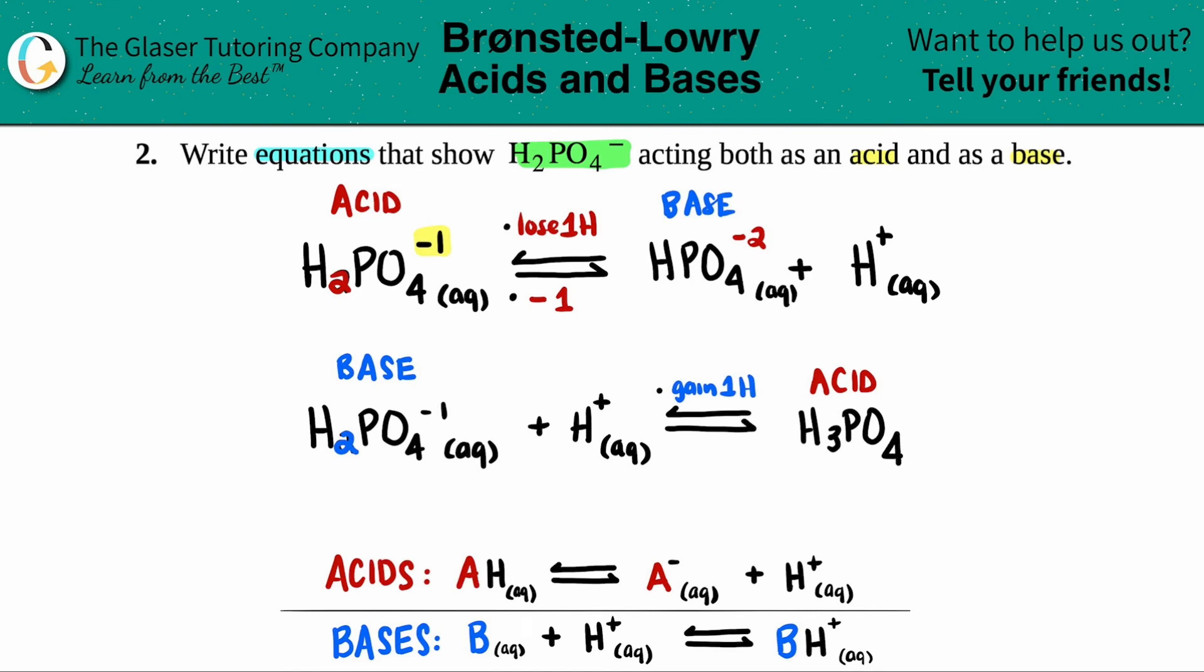Now we just got to do the charge. Well, if acid to base was losing one H and minusing one, you got to do the flip side. Base to acid is gaining one H, and you're just going to add one to the overall charge of what the base was in the beginning. So it was a negative one. Now we're plussing one. Negative one plus one is zero. So you don't even have to write a charge. You can write the zero in the upper right-hand corner. But technically, if you don't see a charge, it is zero.